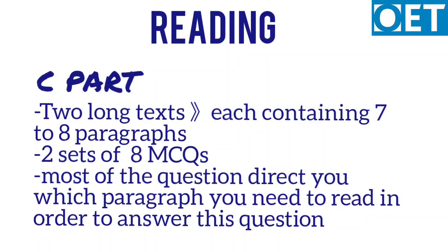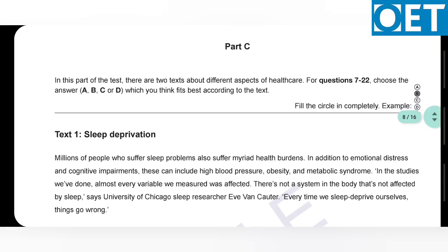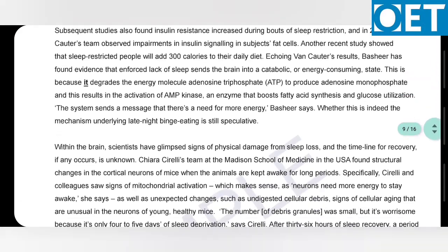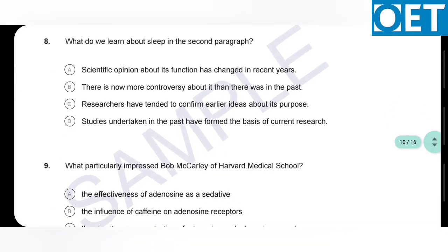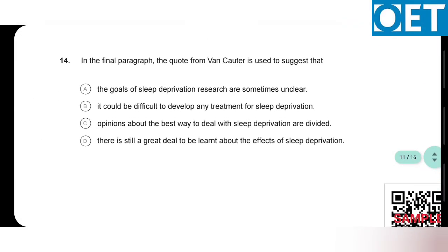Proceeding to part C, which has two long texts. Each text contains seven to eight paragraphs, and after each text you will have eight MCQ questions to solve. Most questions direct you to a specific paragraph you need to read to answer them. For example, text one has eight paragraphs on sleep deprivation. After solving those eight questions, you proceed to text two, and in some questions you can clearly see which paragraph to read — such as the final paragraph.